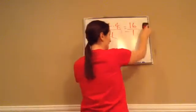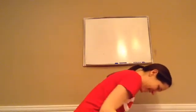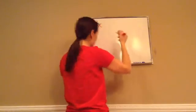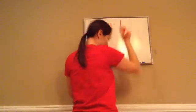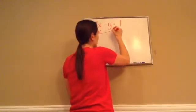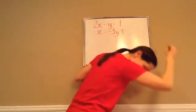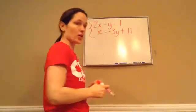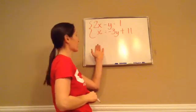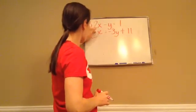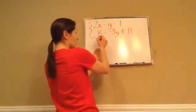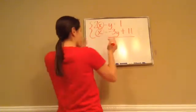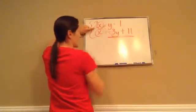Now I need you to use that same thought with what we're about to do. So, they give me these two equations: 2x minus y equals 1, and then they give me x equals negative 3y plus 11. They're going to give you these two equations, couple them like that, and say use substitution to solve for x and y. So I want you to look at these two and say to yourself, does it give me an answer? It does — it tells me that x equals this. So guess what we're going to put in that x spot up top? This x, which is right here, is going to go in that x spot because it told us what x was.